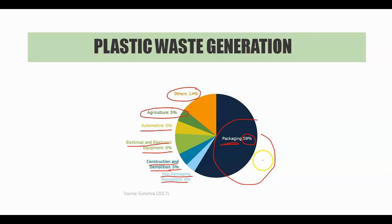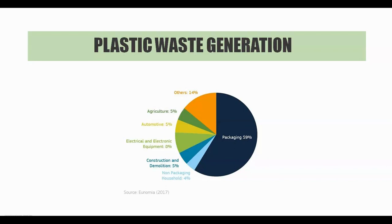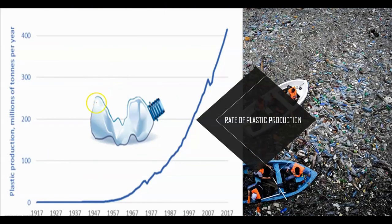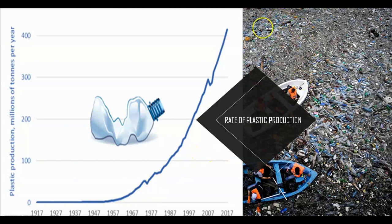Now let's see the production of plastic with the help of this graph. This graph shows the increased amount of global plastic waste production from 1917 to 2017. In 1950, the world produced only 2 million tons per year. Since then, annual production has increased nearly 204-fold, which crossed 400 million tons in 2017.